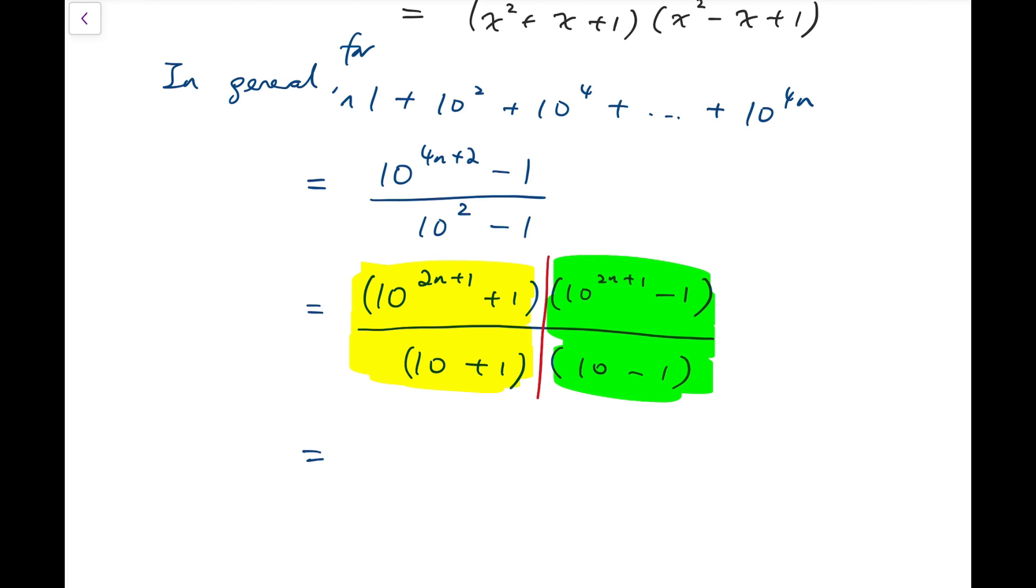Say for the yellow, it's actually 10 to the power of 2n minus 10 to the power of 2n minus 1 plus 10 to the power of 2n minus 2 all the way down to plus 1. And this is again an integer. This is what will happen if I do long division on the yellow fraction.